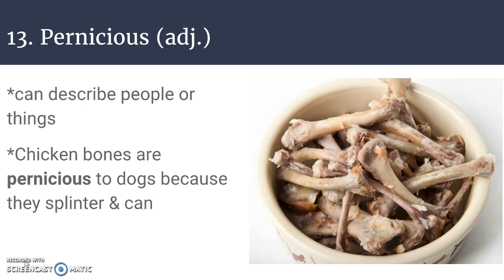Number thirteen is pernicious, which is an adjective. The definition for pernicious is extremely harmful, deadly, or fatal. If something is pernicious, it is able to cause death or extreme harm. This can describe people or things — maybe a villain so evil that they are pernicious, or certain things pernicious to people or animals. Chicken bones are pernicious to dogs because they can splinter and can actually cause death.